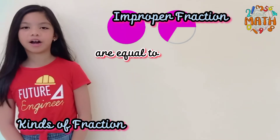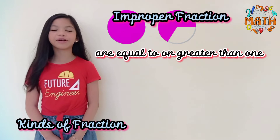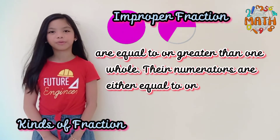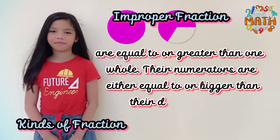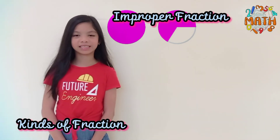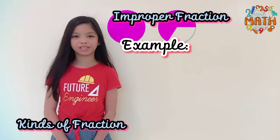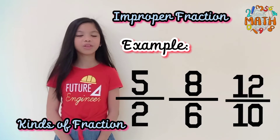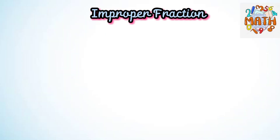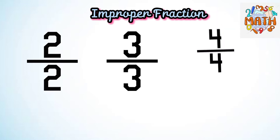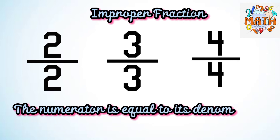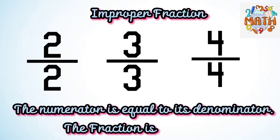Improper fractions are equal to or greater than one whole. The numerator is equal to or bigger than the denominator. Here are the examples of improper fractions: five-halves, eight-sixths, and twelve-tenths. Two-halves, three-thirds, and four-fourths are also called improper fractions because the numerator is equal to its denominator, and the fraction is equal to one.